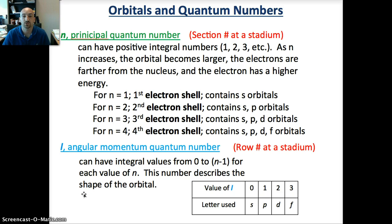First we can look at N, the principal quantum number. You can think of this as just telling you a section number in a stadium - it's this larger region. These always have a positive integral number, such as 1, 2, 3, etc. As N increases, the orbital becomes larger. If you remember the figure we drew earlier, we had the little circle that was N equals 1, then N equals 2, N equals 3, and they keep getting larger. As they become larger, the electrons are farther from the nucleus and the electron has a higher energy. For N equals 1, we're in that first electron shell, which means we have an S orbital. N equals 2, we're in the second electron shell, and in the second shell we have both S and P orbitals.